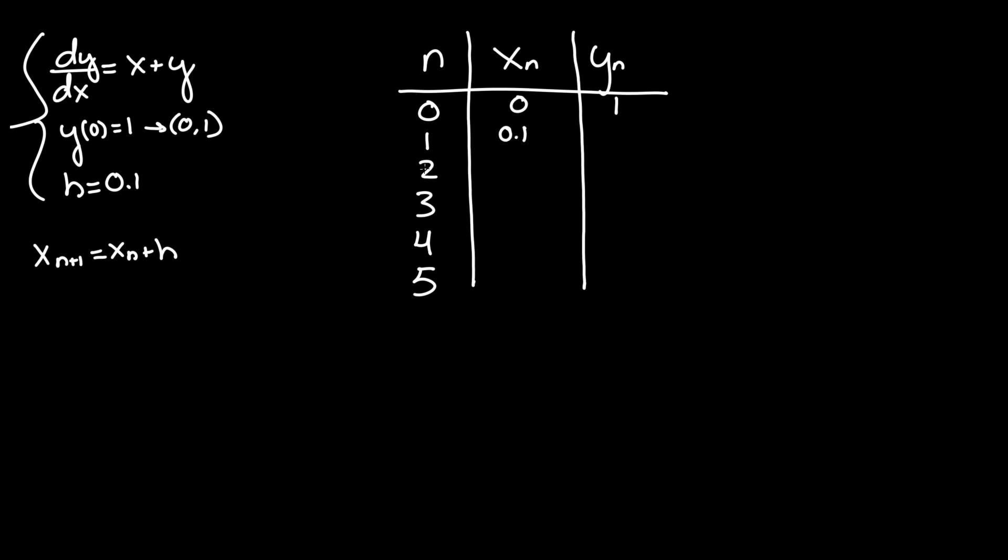For x_2, that equals x_1 + h = 0.1 + 0.1 = 0.2. Similarly, x_3 = x_2 + 0.1 = 0.2 + 0.1 = 0.3, then 0.4, and 0.5.